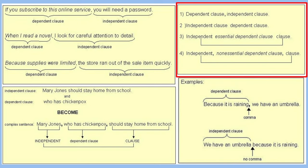Let's look at commas with clauses a little closer. This box at the top is really important. If you have a dependent clause followed by an independent clause, you normally join them with a comma. However, if you have an independent clause followed by a dependent clause, note the absence of a comma. For example: 'Because it's raining, we have an umbrella.' But when you start with the independent clause — 'we have an umbrella' — followed by 'because it's raining,' there is no comma.